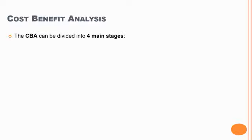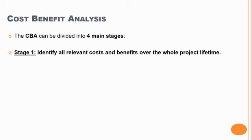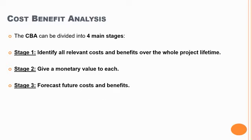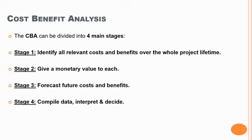There are four main stages that have to be undertaken in order to carry out a cost-benefit analysis. The first thing we should do is to identify all relevant costs and benefits over the whole project lifetime — that's stage one. Stage two, once we have this long list, we have to give a monetary value to each item. Then we can forecast future costs and benefits, quantifying how much of each cost and benefit we expect. Finally, we compile everything together to make a final decision.